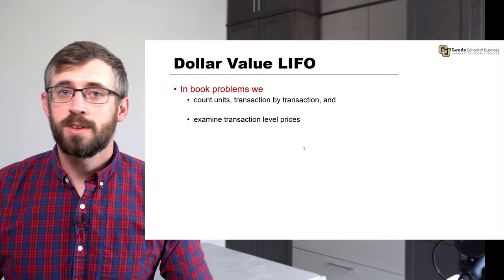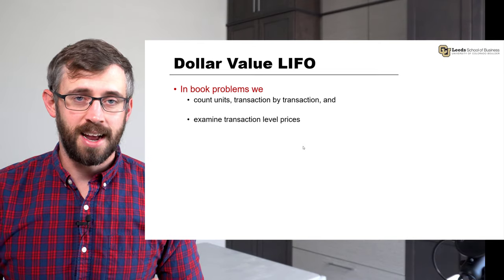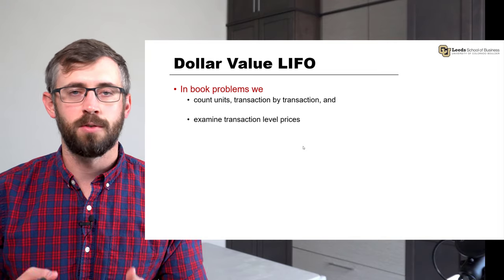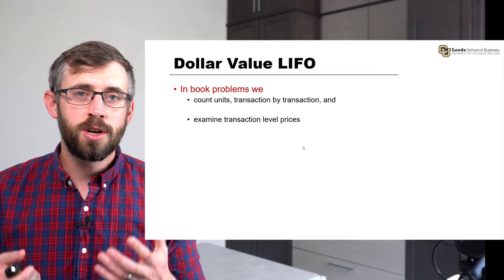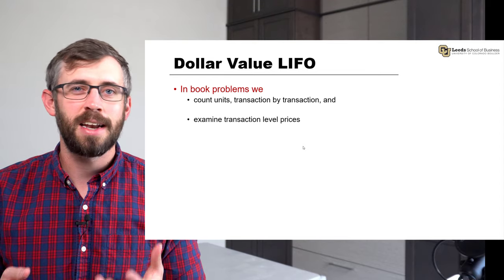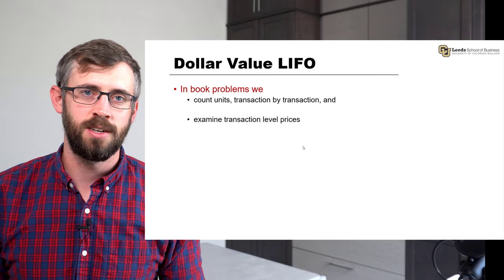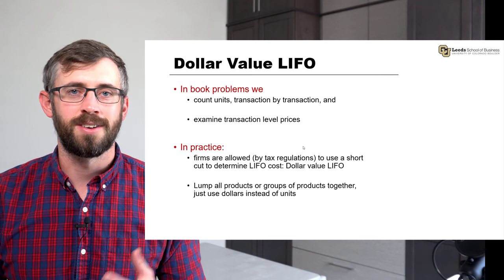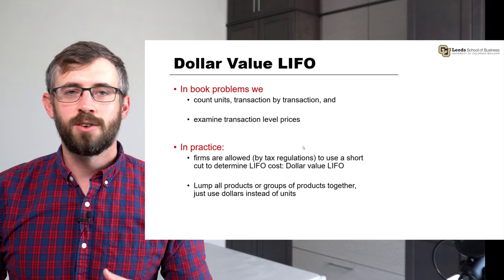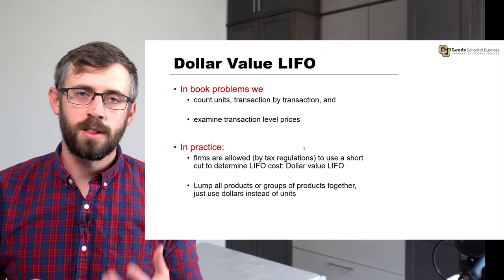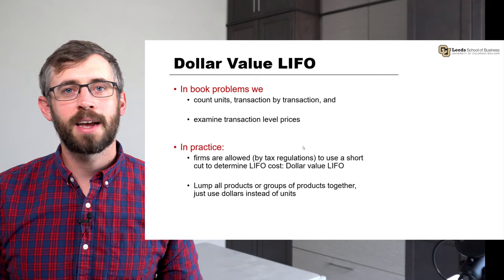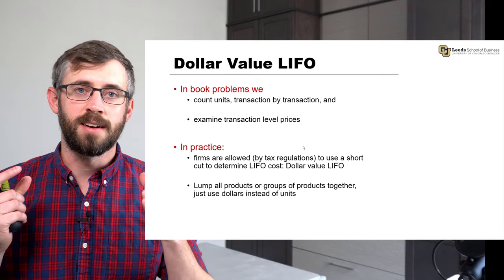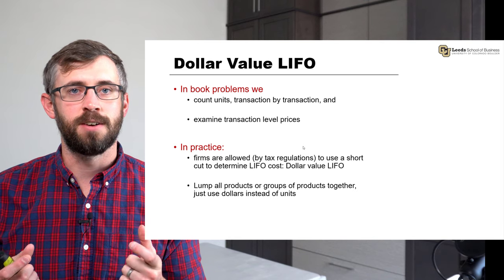Most firms sell more than one product. And if you sell a whole lot of products, that process of counting and tracking LIFO layers for every individual product could be time consuming and may not be worth all of the effort that goes into it. So firms in practice are allowed to use this alternative that we're going to call Dollar Value LIFO — a shortcut to follow the LIFO process by lumping all your products together and tracking LIFO layers based on dollars instead of individual units.